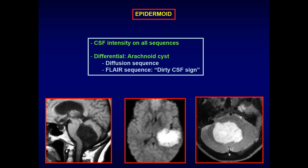On T1 and T2 it is difficult to differentiate from an arachnoid cyst or neurocysticercosis, especially when small. But on FLAIR it will have the dirty CSF sign, and the hallmark is restricted diffusion — it lights up like a light bulb within the brain parenchyma. This clearly differentiates it from arachnoid cyst, neurocysticercosis, or any other intracranial cyst. The study of choice to diagnose epidermoid is the diffusion sequence.